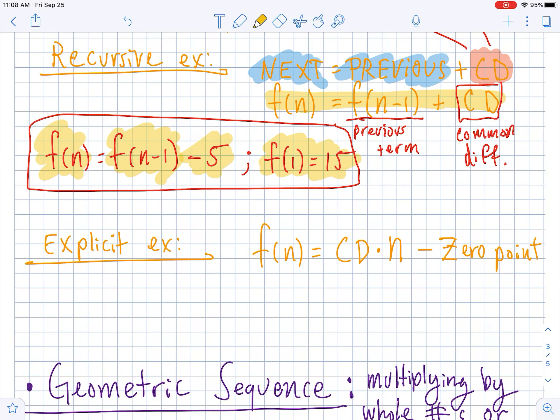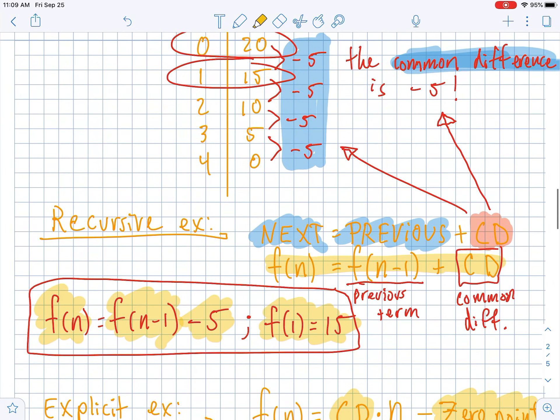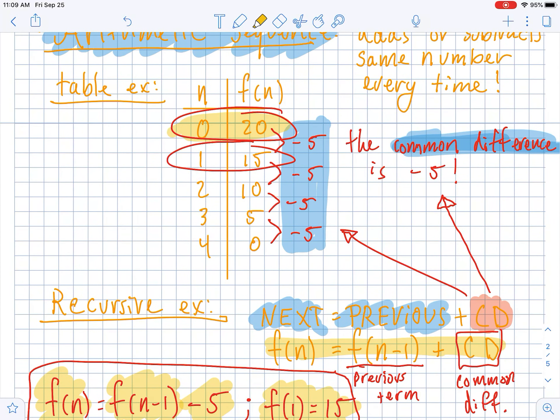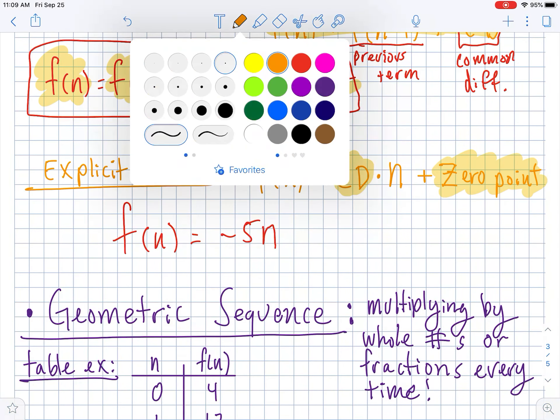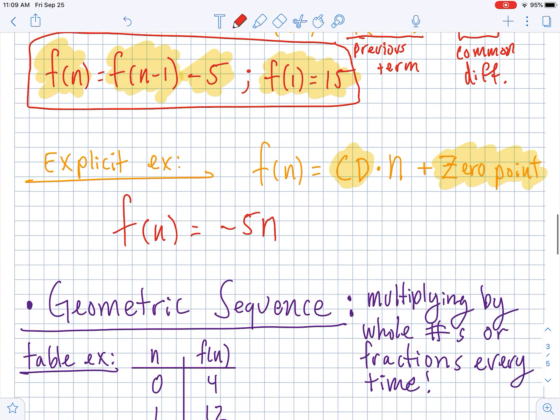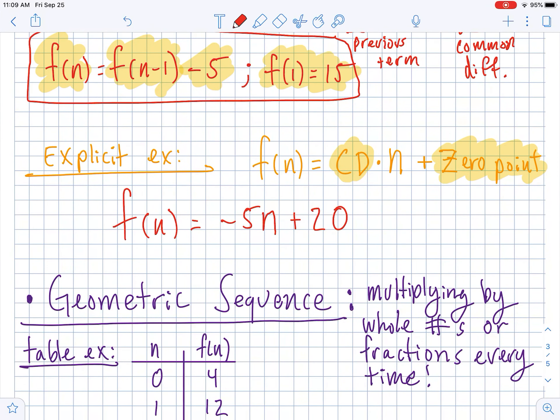Now, an explicit definition is much more of like a function notation style. And here's how explicits work. It still uses the common difference times n, but then you add the zero point. Now the zero point, sometimes like if they give you a real world problem, they just start with like day one or something. And you have to go a step backwards to figure out what day zero was. Luckily in our table, we know that day zero was 20. So we don't actually have to figure it out. We can just use that. So for this particular example, f of n equals the common difference, which is negative 5 times n, plus the zero point. 20 is where it starts on the zero day. So this is an explicit definition of that arithmetic sequence.